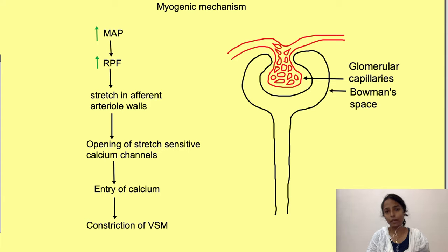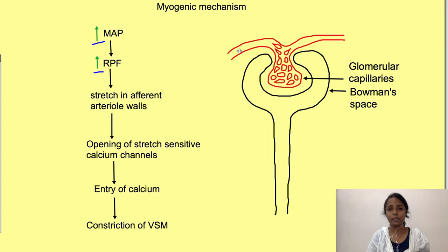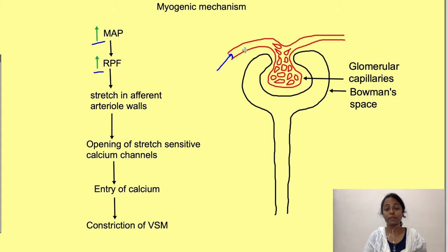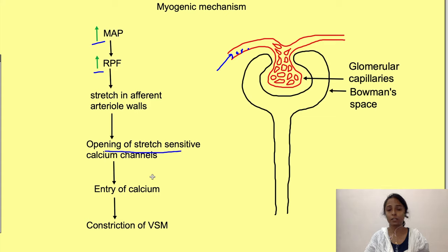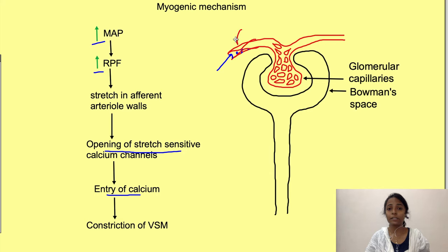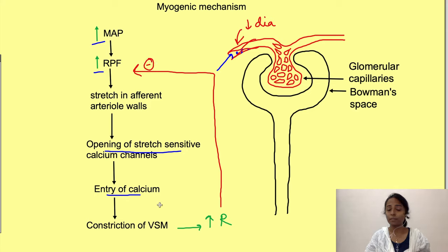In the myogenic mechanism, when mean arterial blood pressure increases, renal blood flow in the arterioles increases. These arterioles have stretch-sensitive calcium channels, so increased flow causes these channels to open, allowing calcium ion entry. The calcium ions cause constriction of the smooth muscle in the arteriole wall. This is a local reflex: increased renal blood flow causes decreased arteriole diameter, increased resistance, and decreased renal blood flow.